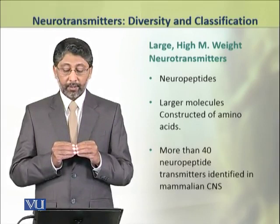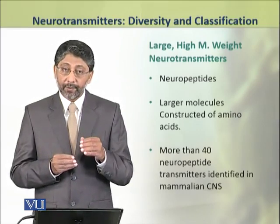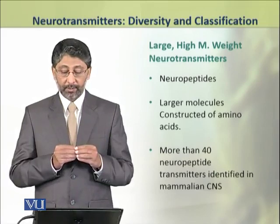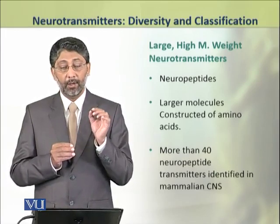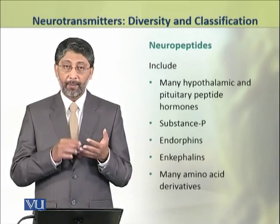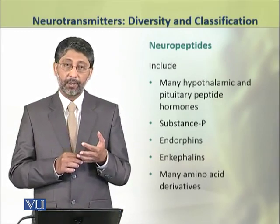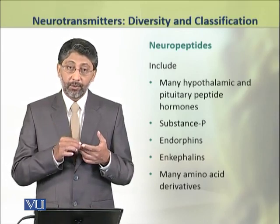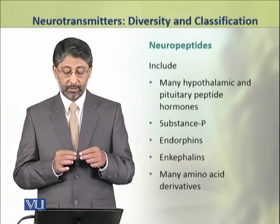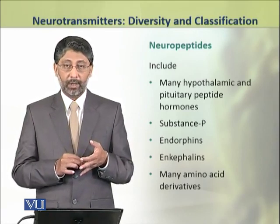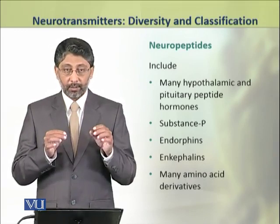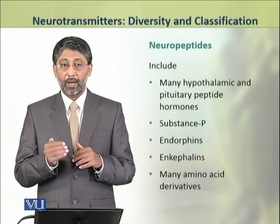The large, high molecular weight neurotransmitters are large-size molecules derived from amino acids. These neurotransmitters include many hypothalamic and pituitary peptide hormones. They include substance P, which is involved in the reduction of pain. Moreover, endorphins and encephalins are also neuropeptides. Many amino acid derivatives, in addition to these substances, are also neuropeptides.